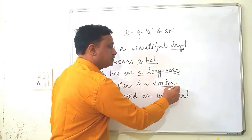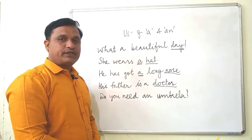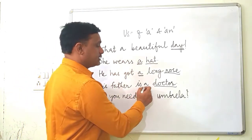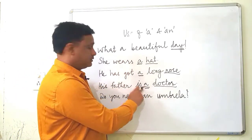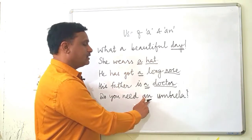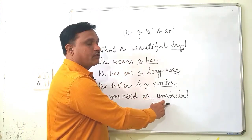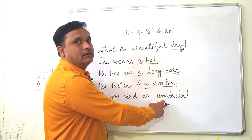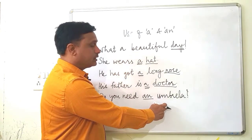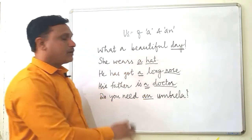Doctor is a profession. For any kind of profession we use article A or AN. 'Do you need an umbrella?' — AN is used here because umbrella is a countable noun and it is singular.